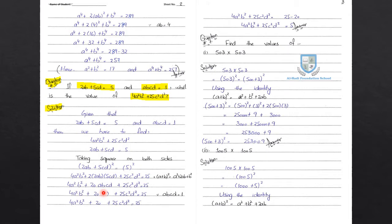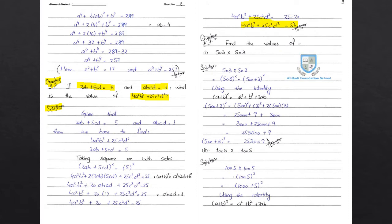Now substituting the value of abcd which is 1: 4a square b square plus 20 times 1 plus 25c square d square equals 25. So 4a square b square plus 20 plus 25c square d square equals 25. Moving 20 to the other side: 4a square b square plus 25c square d square equals 25 minus 20, which is 5.